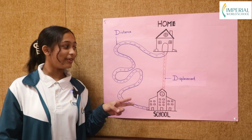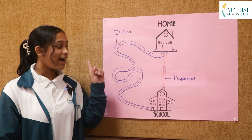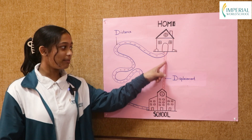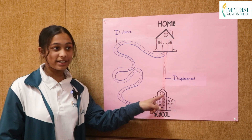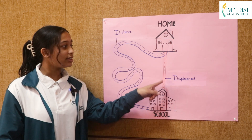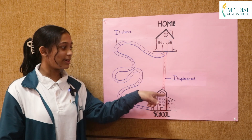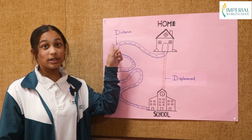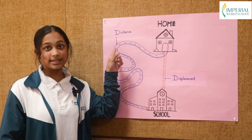The second point is that if I use the red path, which is the shortest path from my home to my school, the displacement will be equal to the distance.